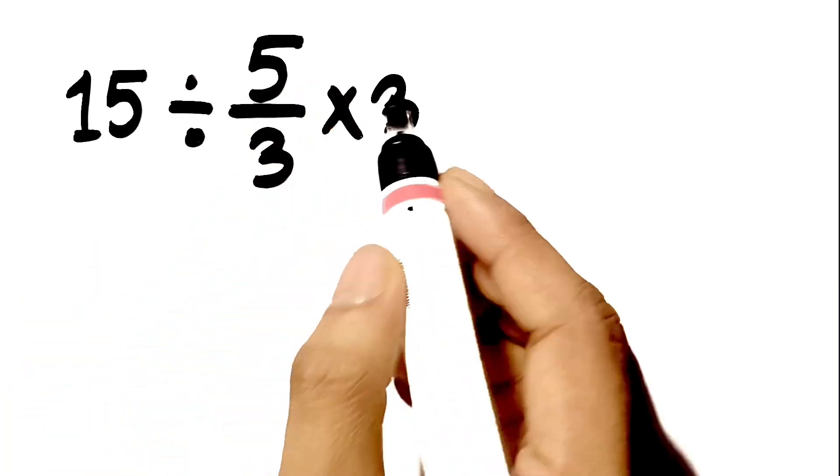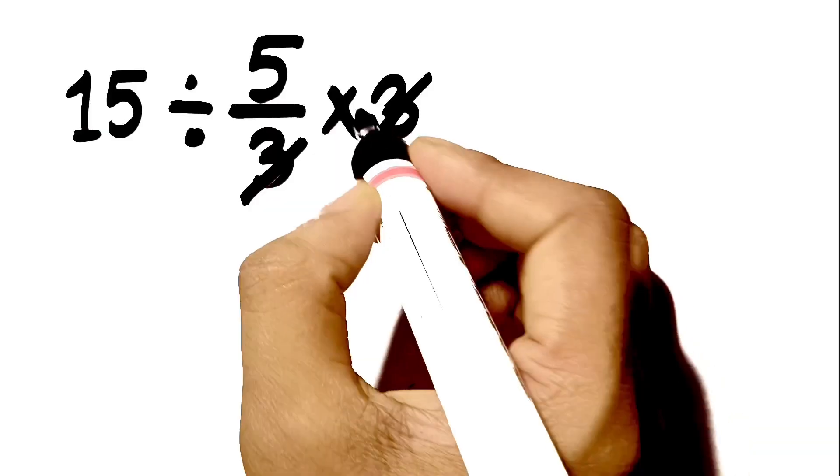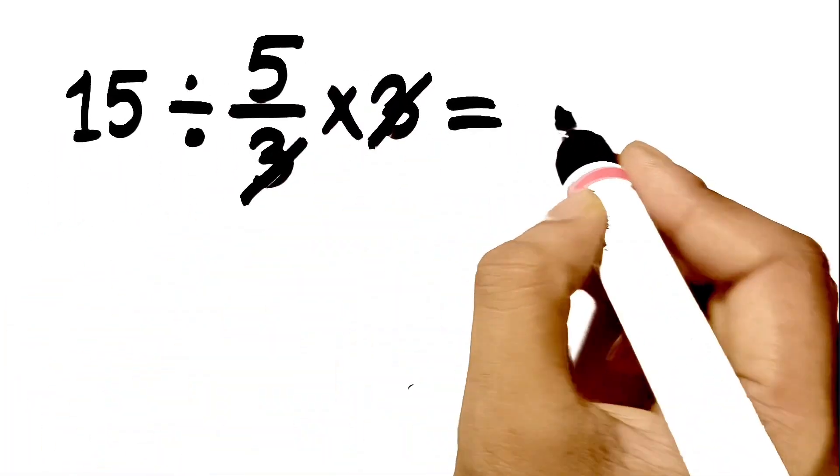The 3 in the denominator cancels with the 3 that is multiplied at the end, which gives us 1. So 15 divided by 5, which gives us 3.